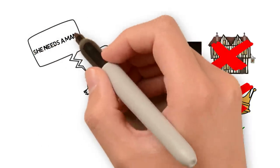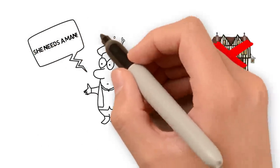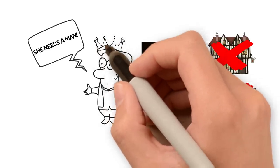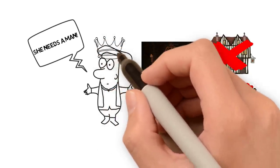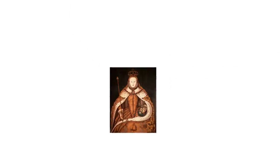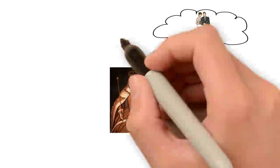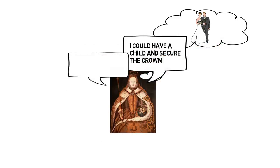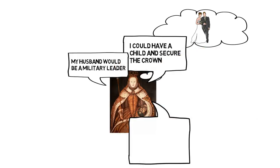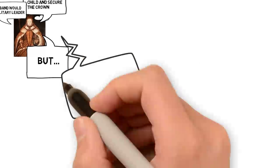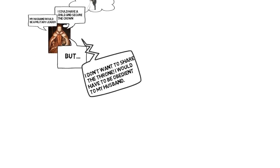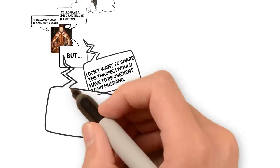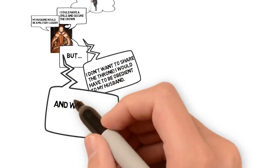Elizabeth's older sister Mary had ruled as queen, but she had a husband who could make the big political decisions. People believe only a man can make such important decisions. Elizabeth is encouraged to take a husband. This would have a couple of benefits: she could have a child and guarantee the Tudor throne for the next generation, and her husband could act as a military leader. However, Elizabeth is not happy about having to submit to a husband who would outrank her.